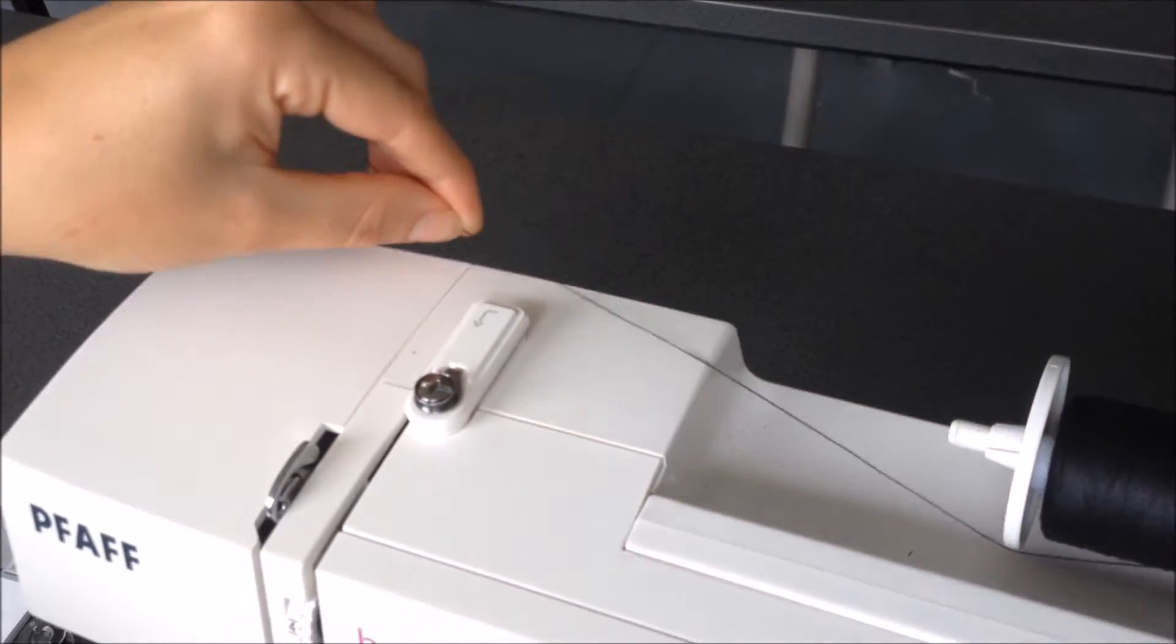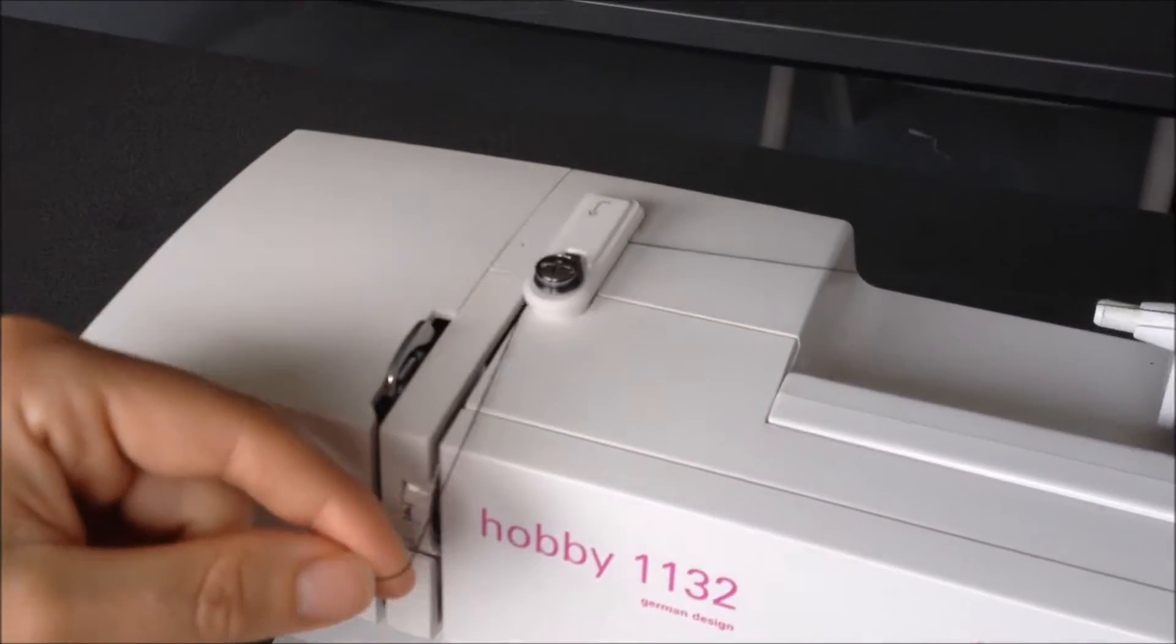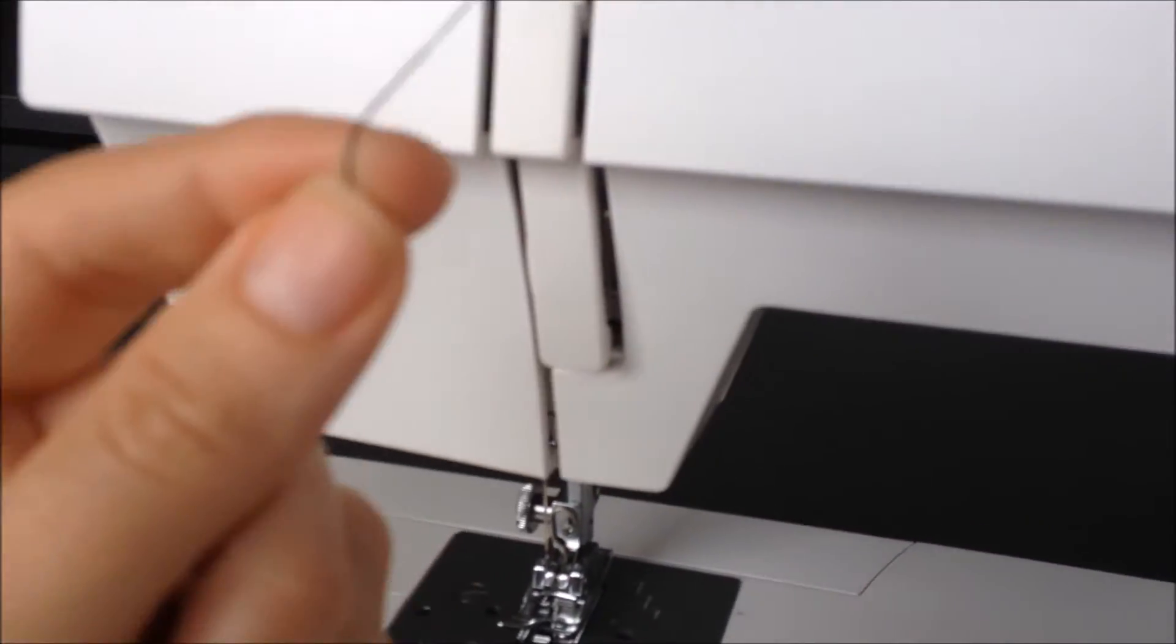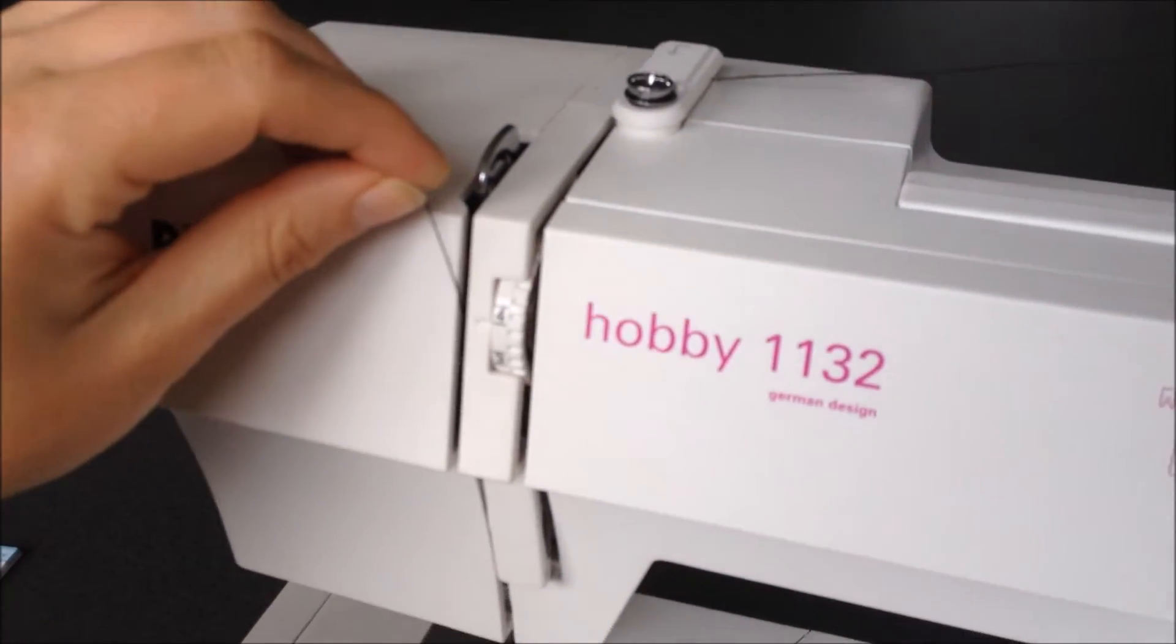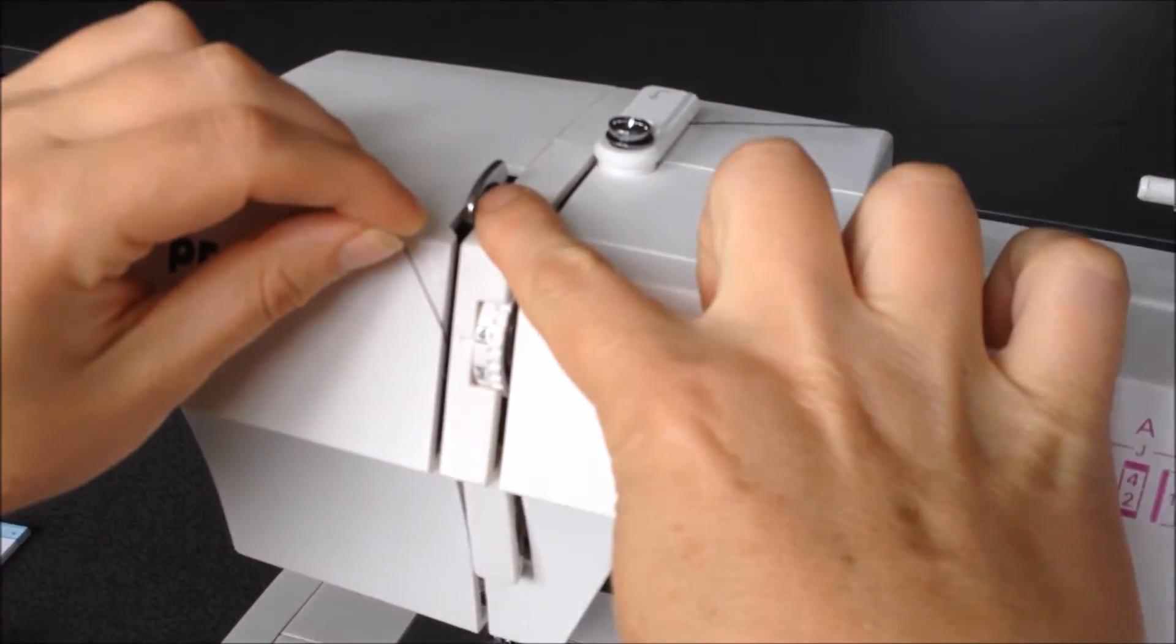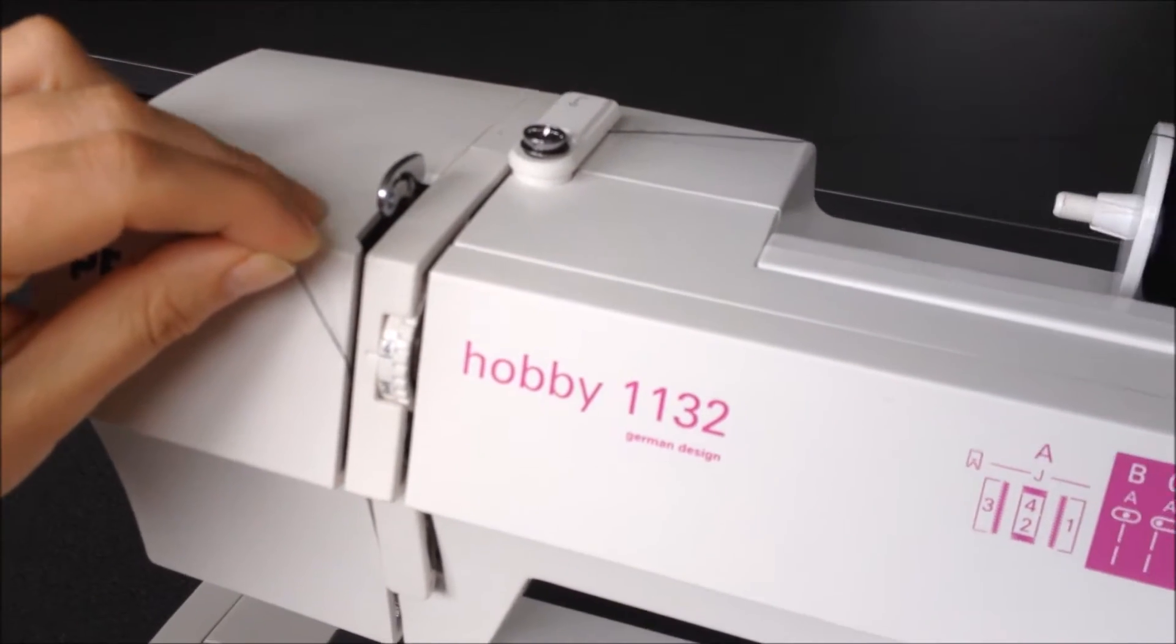Then you take your thread, move around the thread guide and take your thread in a U shape all the way around and back up to the top. This is the take-up lever. If it's not there you might just need to adjust your hand wheel.